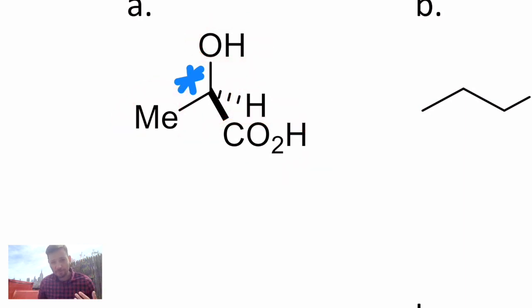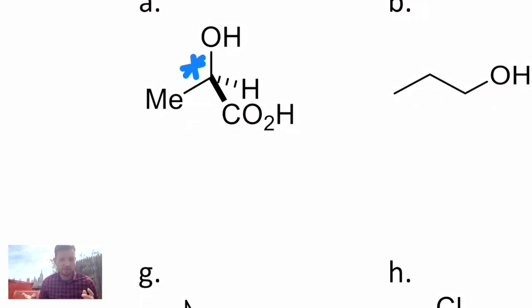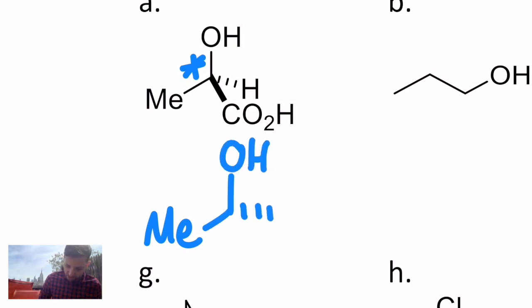Now if I had to draw the enantiomer of this, I could draw it exactly the same, but change the stereochemistry of that asymmetric carbon by just swapping two of the four groups. Let me show you what I mean. I'll draw the methyl in the same spot, the OH in the same spot, but I'm going to invert where the CO2H group and the H group exist.